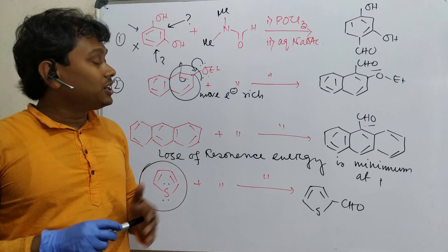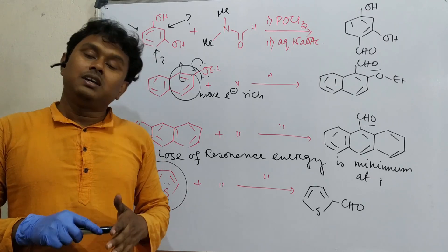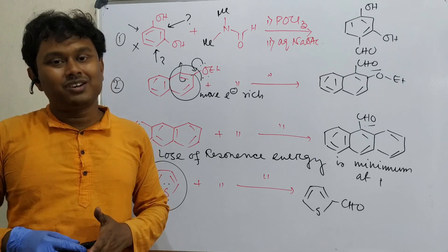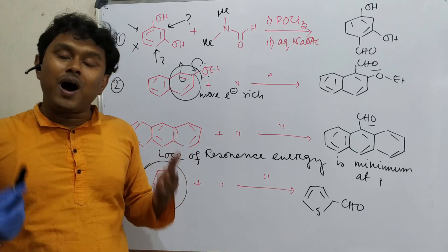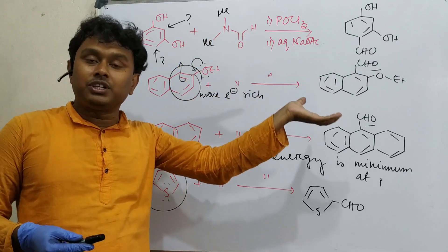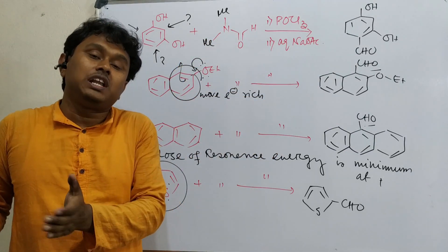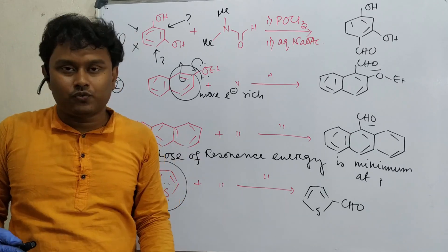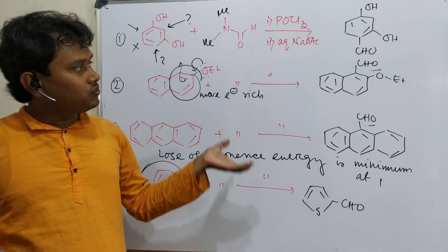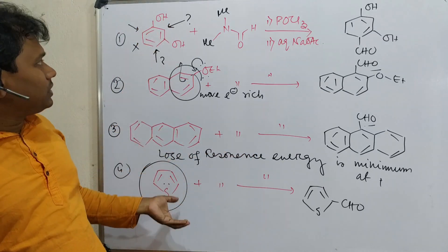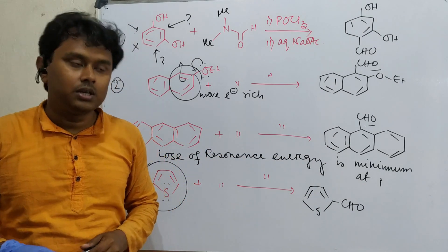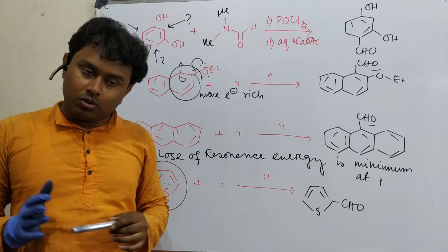This is the overall discussion for Vilsmeier-Haack reaction. What we have learned today: the basic idea and reaction mechanism, how the electrophile is generated, and most importantly, why this reaction happens only on electron-rich substrates. The electrophile is not that strong, it's a milder electrophile. That's why this reaction happens only on electron-rich aromatic nucleus. These examples show electron-rich nuclei where this reaction produces specific products.